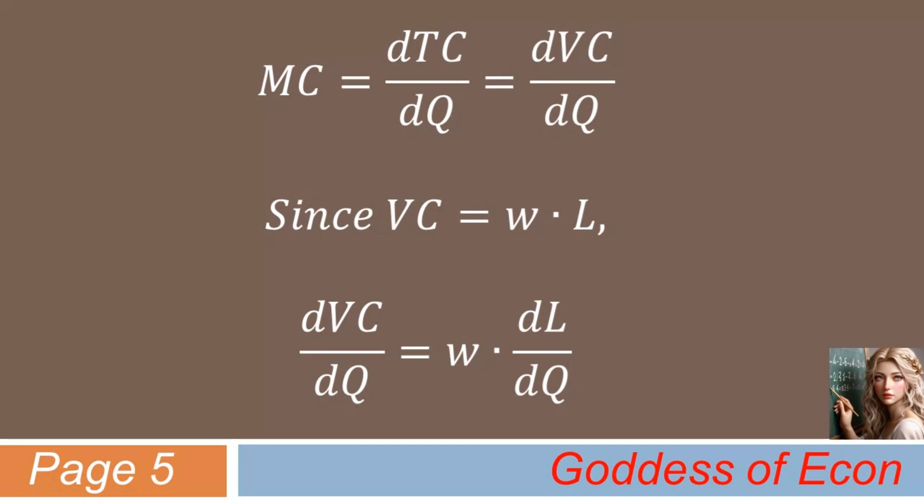So, if you differentiate the variable cost equation with respect to Q, you'll get w times dL/dQ. And again, this equals marginal cost.